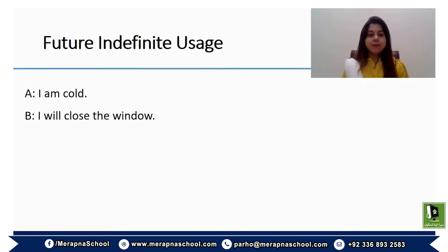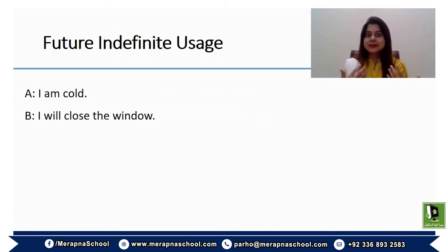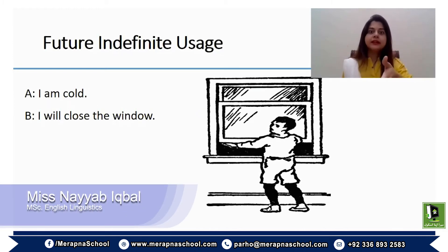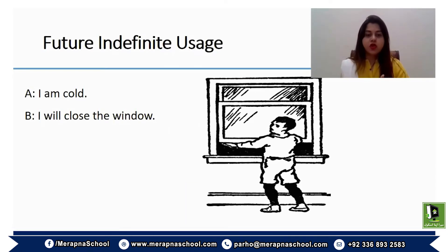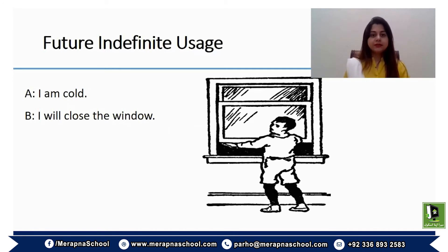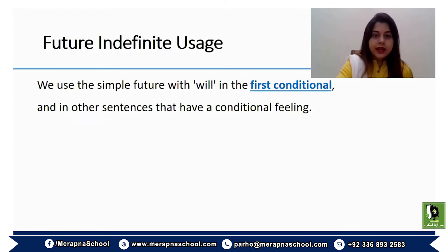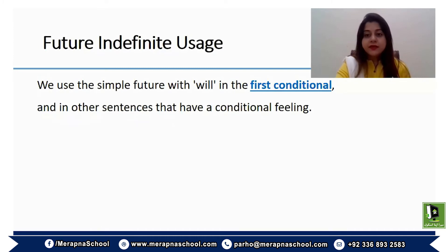For instance, one person says 'I'm cold,' and the moment you say that, you expect the other person to do something. The second person says 'I will close the window' — at the very moment of saying it, they are doing it. This is how future tense is used when you are actually doing something at the moment of speaking about it.